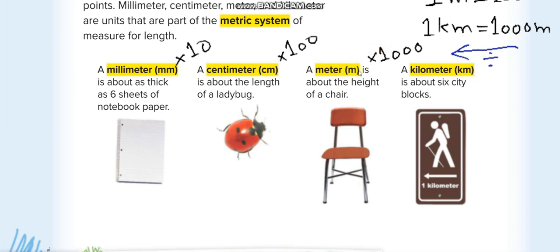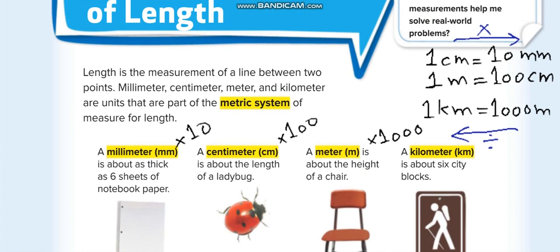When you join 1,000 meters together, you will get one kilometer. It is about six city blocks. We use kilometers to measure distances — for example, the distance from school to your house, from school to a hospital, or from a hospital to the library. It's a big unit.